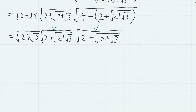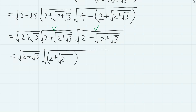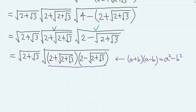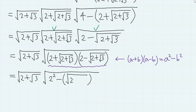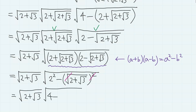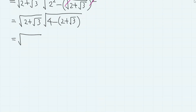So for these two, first combine: 2 plus √(2 + √3) times 2 minus √(2 + √3). Then use the formula to expand: 2 squared minus √(2 + √3) squared, so we have 4 minus 2 plus √3, giving us 2 plus √3 here and 2 minus √3 here.